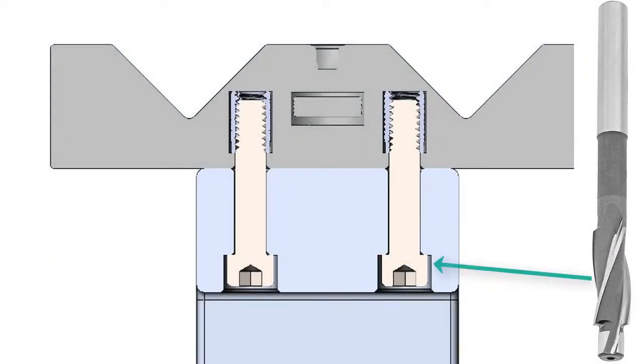Counterbores are clearance holes made with a counterbore tool, as shown here. This hole allows the head of the fastener to sit below the surface of the part.